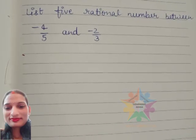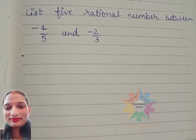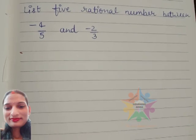Hello friends, welcome to my channel Learning. In this video we will discuss how to list five rational numbers between -4/5 and -2/3.